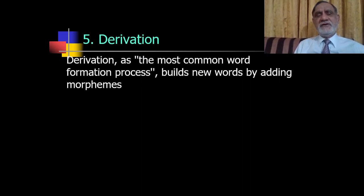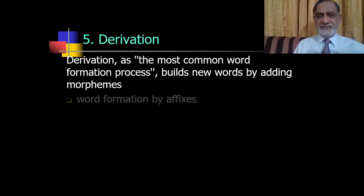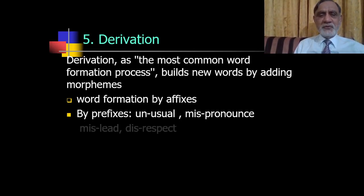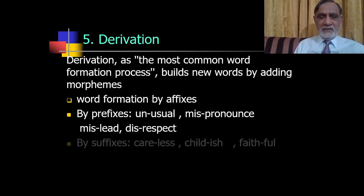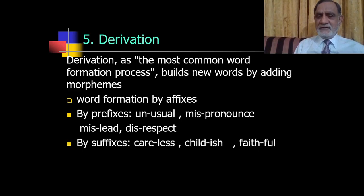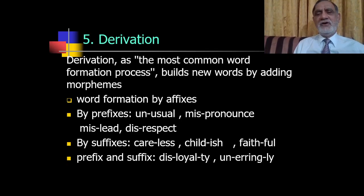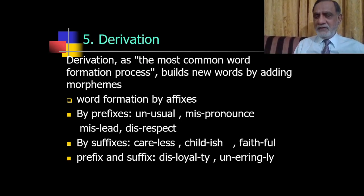The fifth type is derivation — the most common word formation process, which builds new words by adding morphemes, specifically affixes. By prefixes: 'unusual', 'mispronounced', 'misled', 'disrespect'. By suffixes: 'careless', 'childish', 'faithful' — using suffixes like '-less', '-ish', '-ful' and prefixes like 'mis-', 'un-', 'dis-'. A combination of prefix plus suffix is also possible, for example 'dis-loyal-ty' or 'un-erring-ly'.